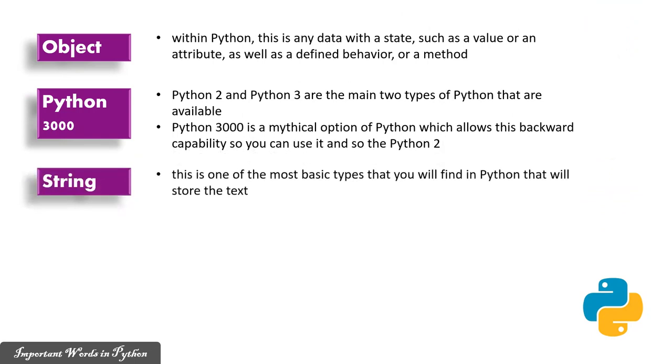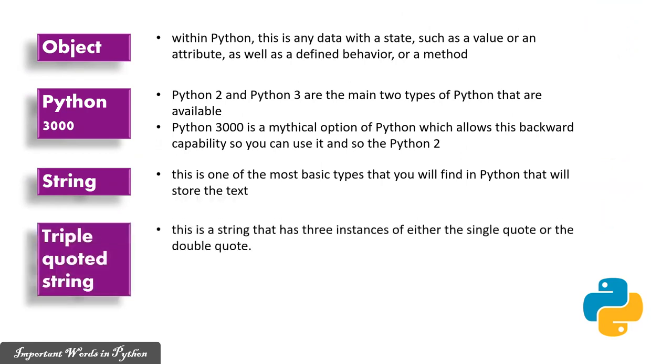String: This is one of the most basic types that you will find in Python that will store the text. Triple-quoted string: This is a string that has three instances of either the single quote or the double quote. It could have something like 'I love tacos'.